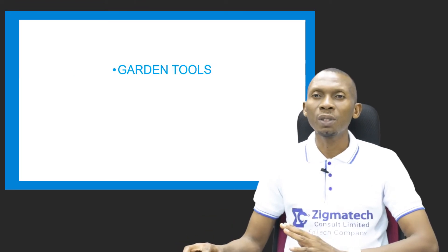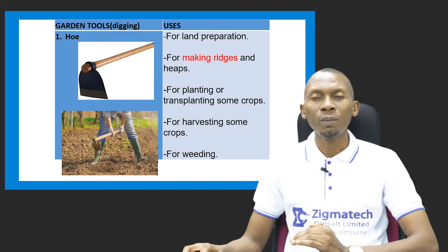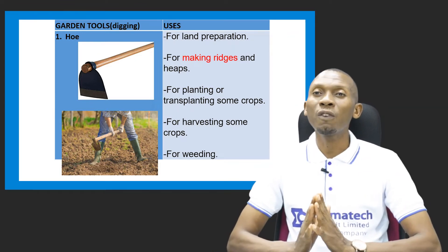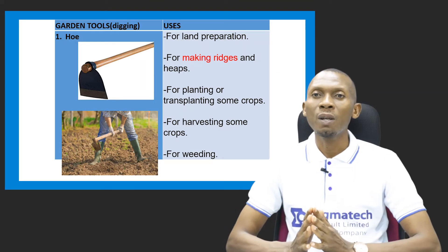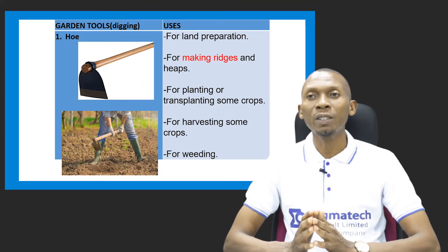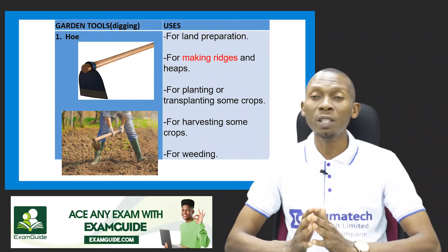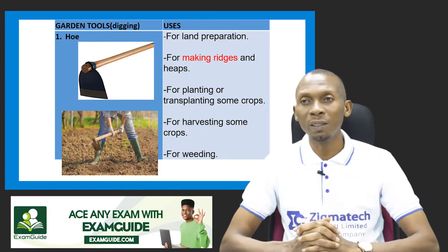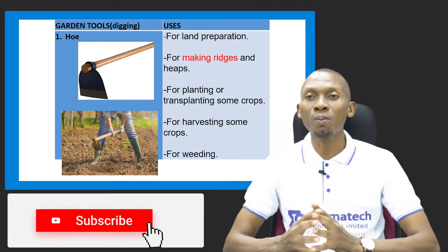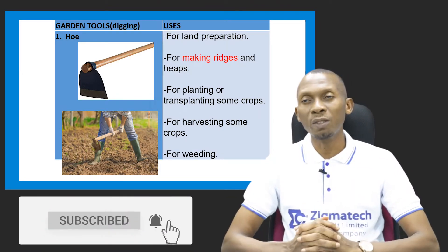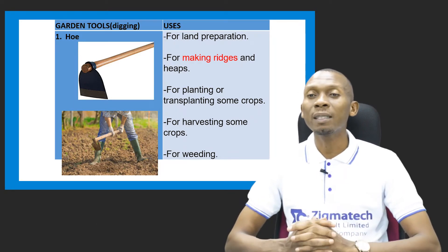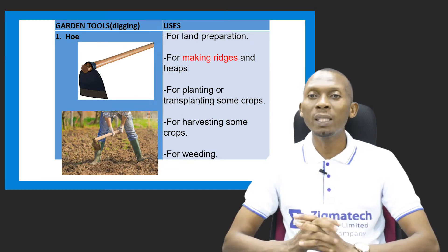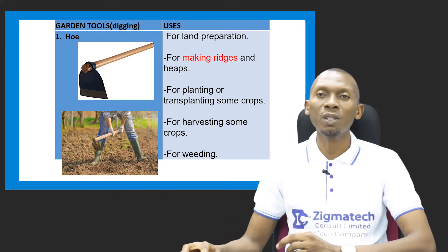Starting with garden tools, we have the hoe. The hoe is used for land preparation. It can be used for making ridges and heaps on which crops grow to ensure easy root penetration. It can also be used for planting or transplanting some crops, for harvesting some crops, and for weeding in order to control weeds on the farm.